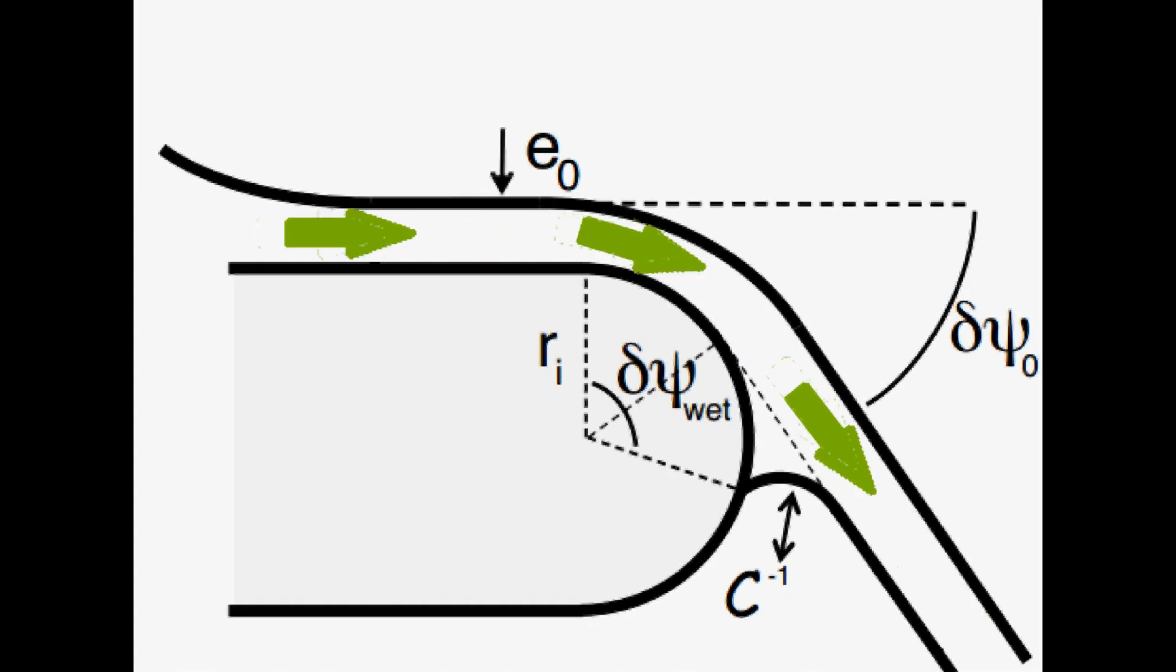And delta phi wet is the angle the fluid keeps making contact with the spout. C is the curvature of the meniscus, which forms between the stream and the spout. Now let's make the teapot effect more quantifiable.